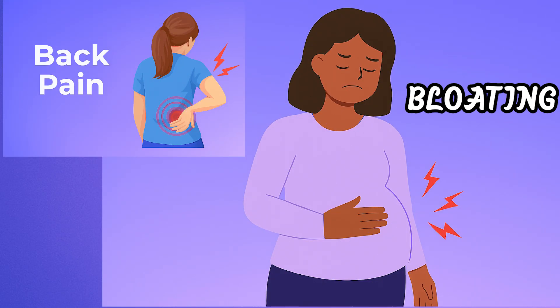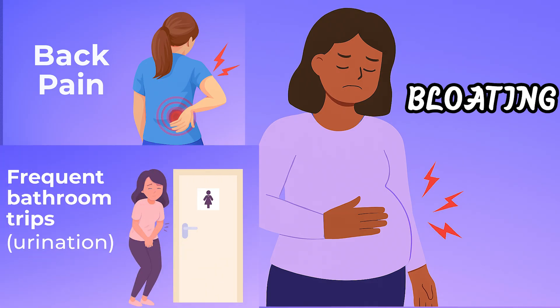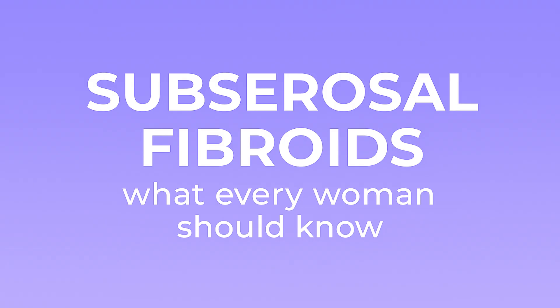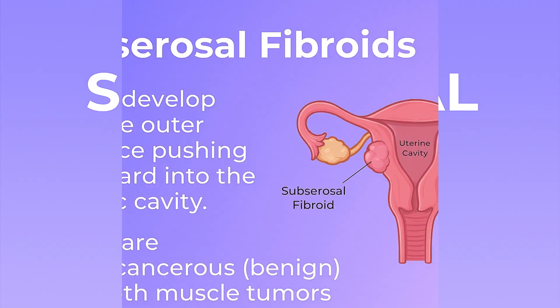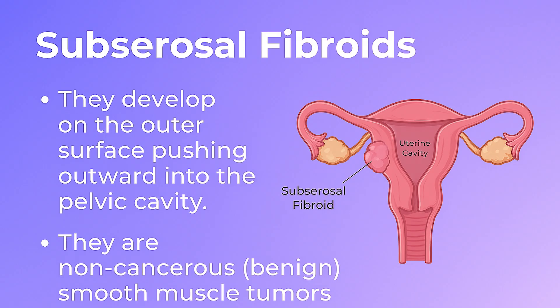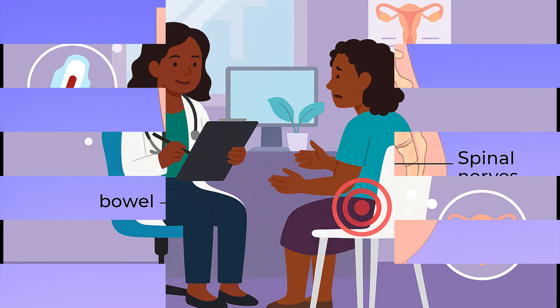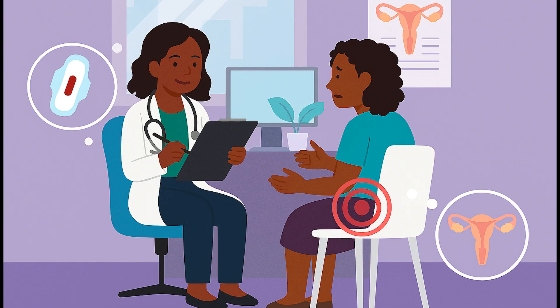Did you know that a fibroid growing outside your uterus could be the reason behind your bloating, back pain, or frequent bathroom trips? Let's break it down, starting with subserosal fibroids. Unlike fibroids that grow inside the uterus, subserosal fibroids develop on the outer surface, pushing outward into the pelvic cavity. As they grow, they can press against nearby organs like the bladder, bowel, or even spinal nerves, leading to symptoms that are often misunderstood.